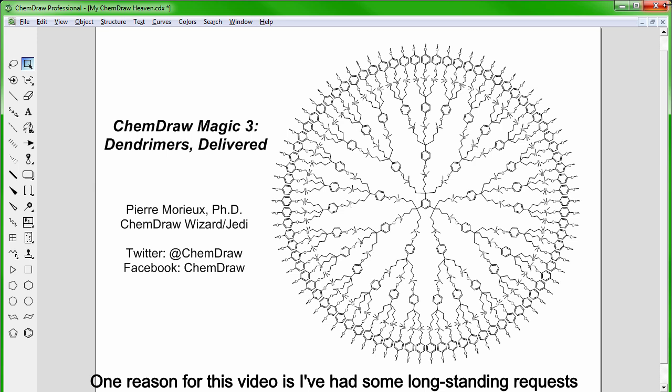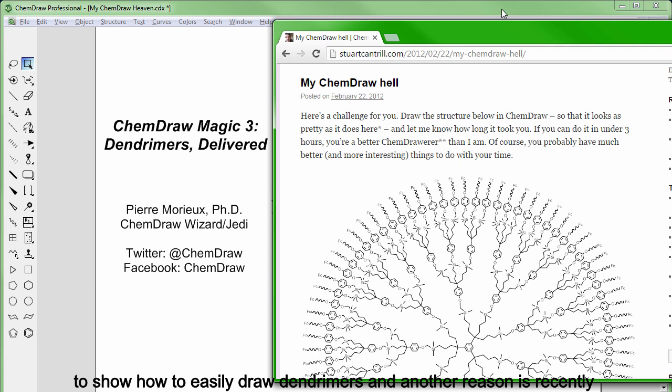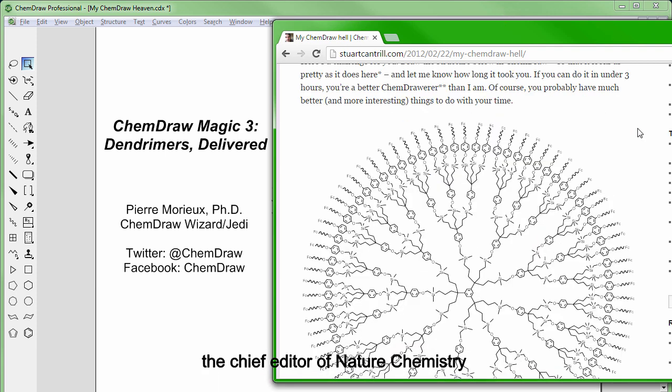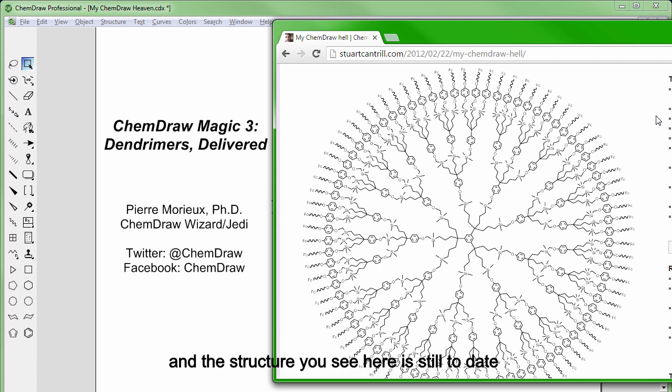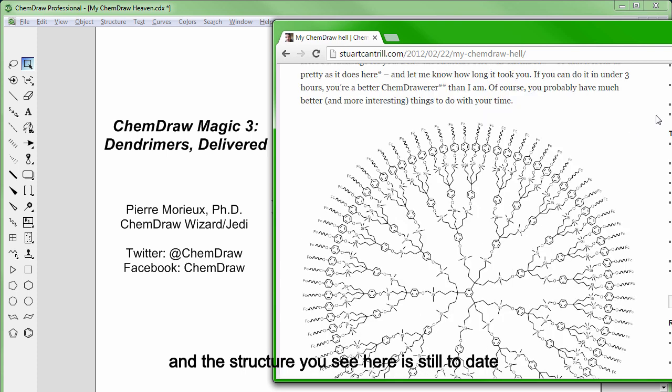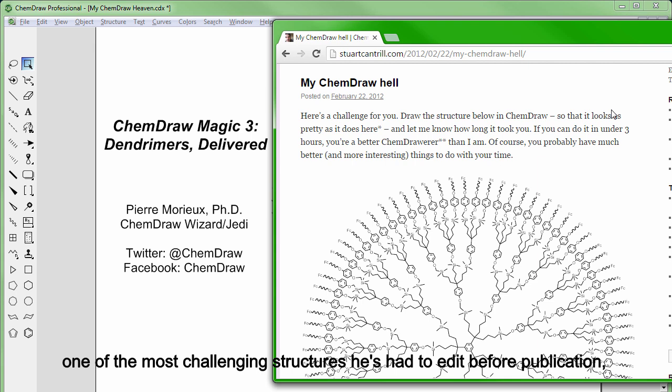One reason for this video is I've had some long-standing requests to show how to easily draw dendrimers, and another reason is, I was browsing recently Stuart Cantrell's blog, who's the chief editor of Nature Chemistry, and the structure you see here is still to date one of the most challenging structures he's had to edit before publication, as you may probably guess from the title of the blog post.